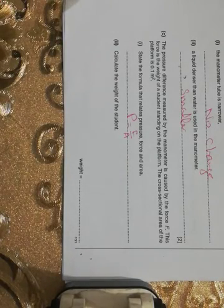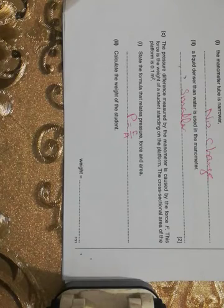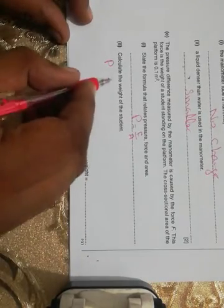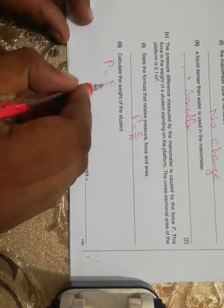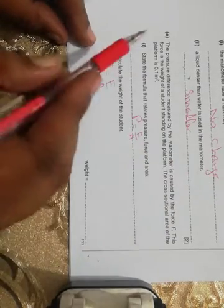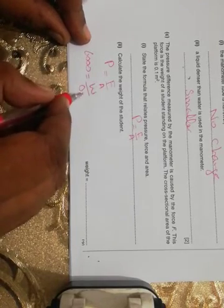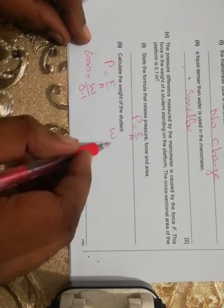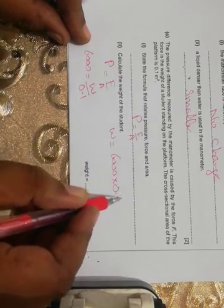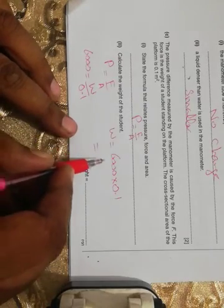He says calculate the weight of the student. So what is the pressure here? You know that P equals F by A. The pressure here is 6000 Pascal, the force is equal to the weight, and the area is given 0.1. So I will cross multiply: 6000 multiply 0.1, it will be 600 Newton.